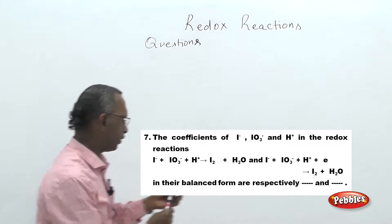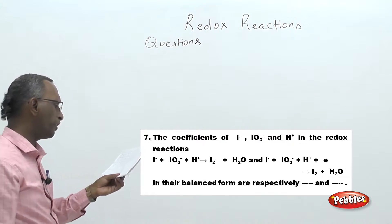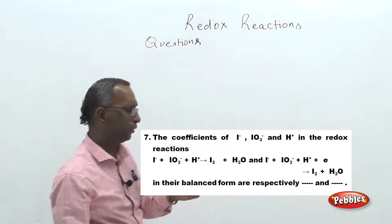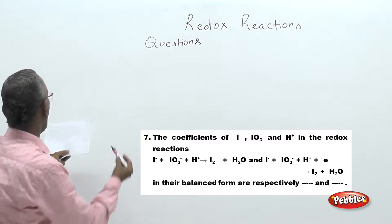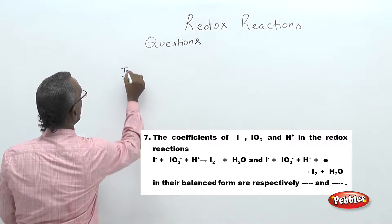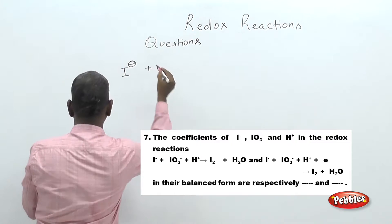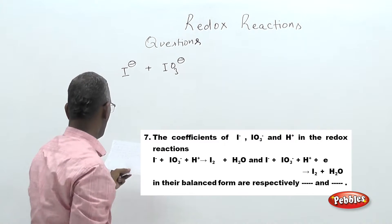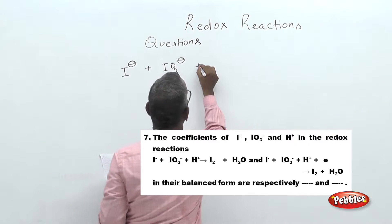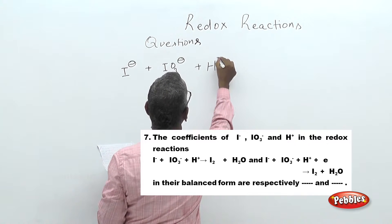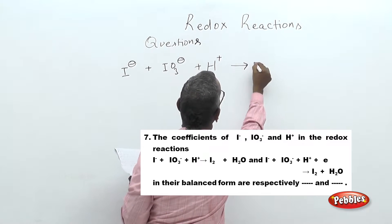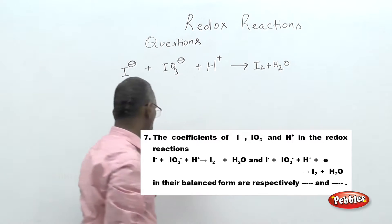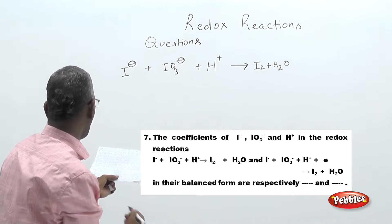This question reads as the coefficients of iodide, iodate, and proton in the redox equation. They have given this equation: I⁻ plus IO₃⁻ plus H⁺ (proton in acid medium) giving I₂ plus H₂O in the balanced form.